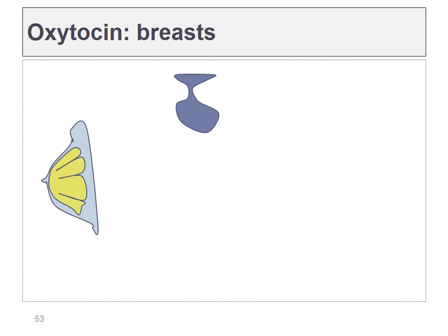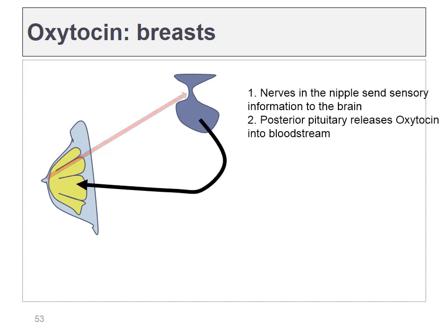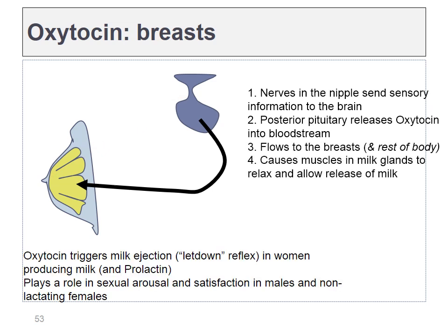The second function of oxytocin is triggering the letdown reflex. Stimulation of the nipples signals the pituitary to release oxytocin, which triggers the glandular tissue to squeeze and release breast milk. The breasts had to be primed beforehand by prolactin — if there's no breast milk in the breasts, oxytocin cannot trigger the letdown reflex. We say therefore that prolactin has a permissive role when it comes to oxytocin. A midwife may stimulate a pregnant woman's nipples to increase oxytocin production, which can increase uterine contraction strength to speed along a difficult delivery.